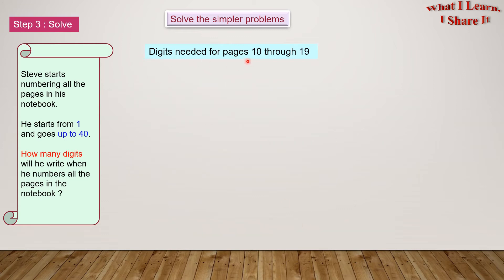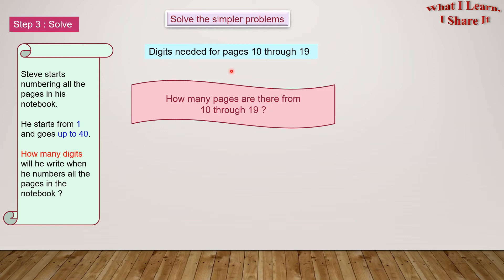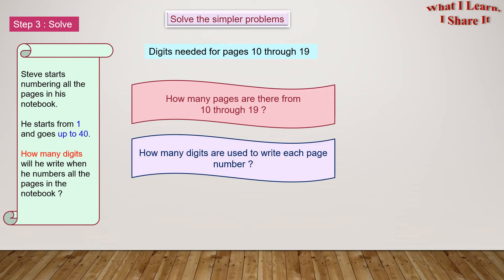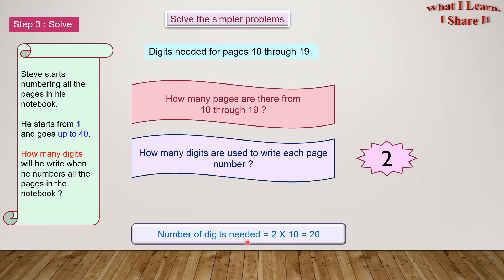Now solving for digits needed for pages 10 through 19. There are 10 pages from 10 to 19. Two digits are needed to write each page number. Number of digits needed equals 2 times 10 equals 20.